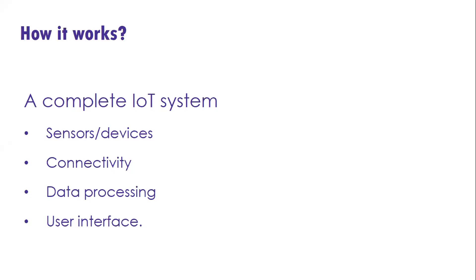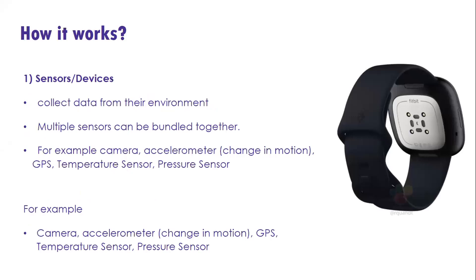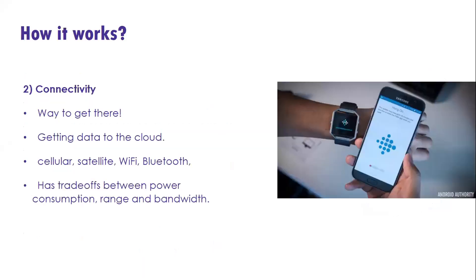Taking Fitbit as an example, there are many sensors used to collect information — heart rate, number of footsteps traveled within a day. Several sensors and devices are used, such as a camera, accelerometer to track user behavior and footsteps based on change of motion, GPS, temperature sensor, and pressure sensor. Connectivity means the way we upload the collected data to the cloud so we can process it.